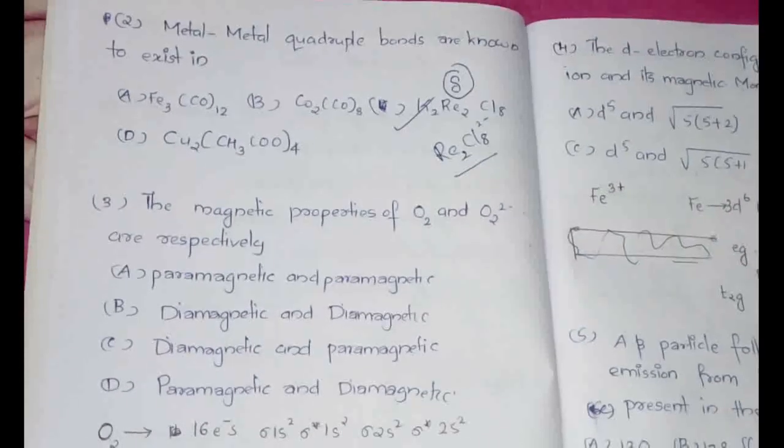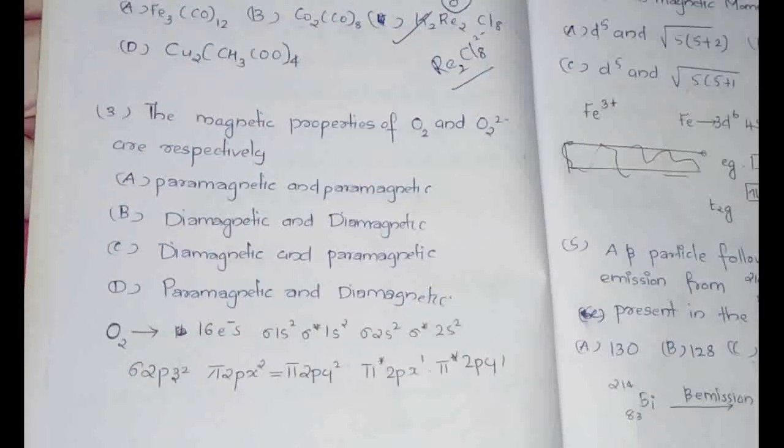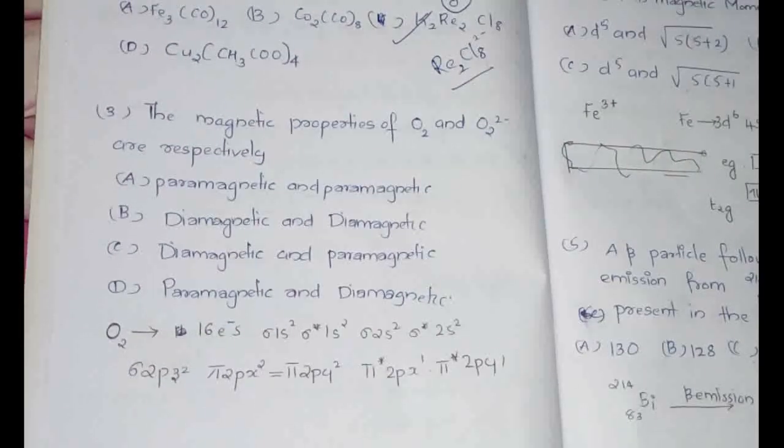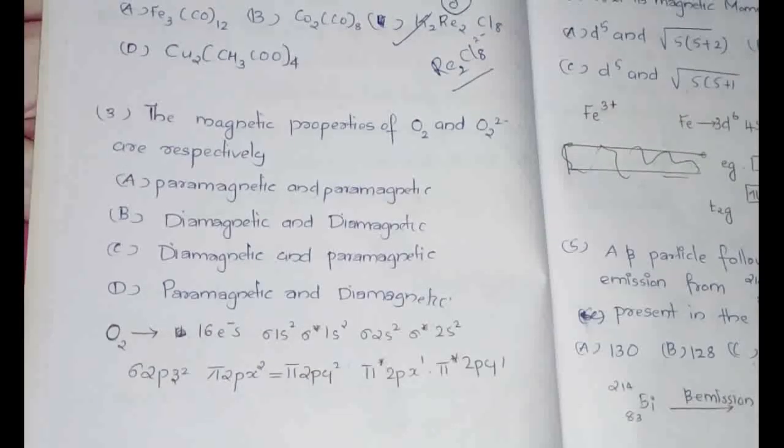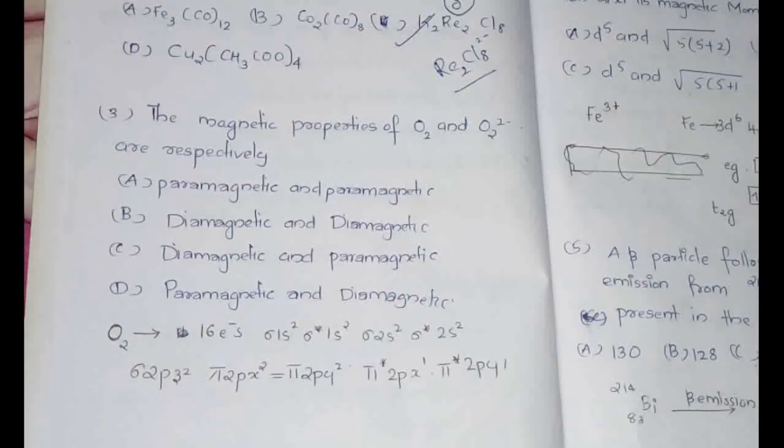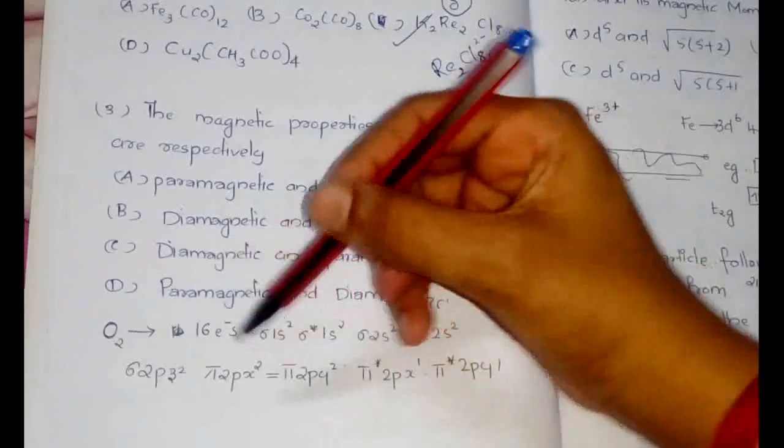Now the next question: the magnetic properties of O2 and O2 2- are respectively. For this we have to write the molecular orbital and fill the electrons as such.